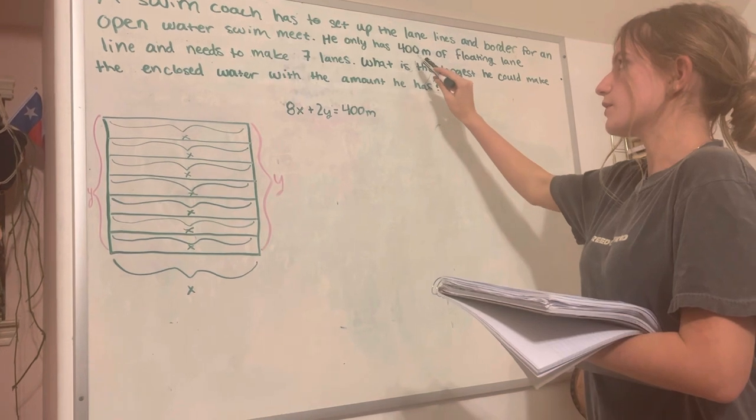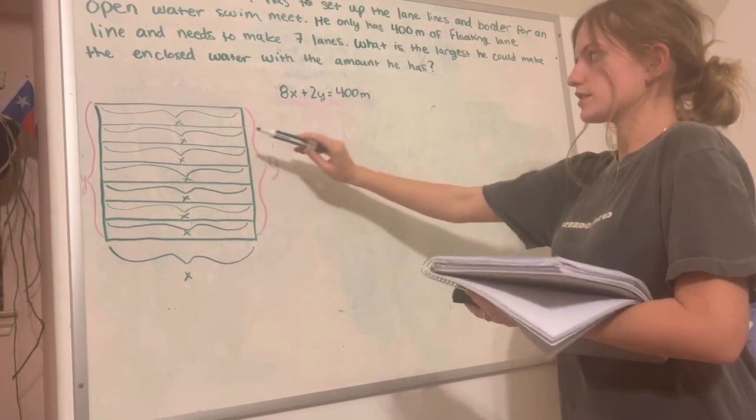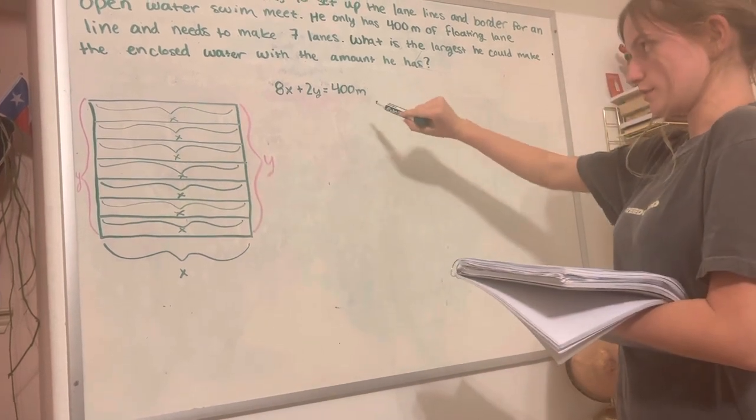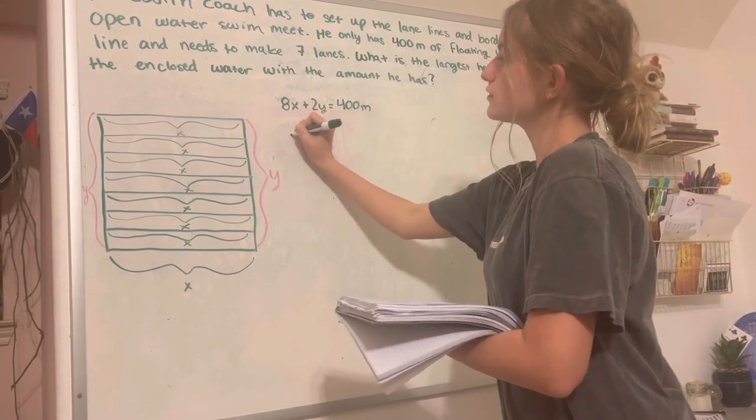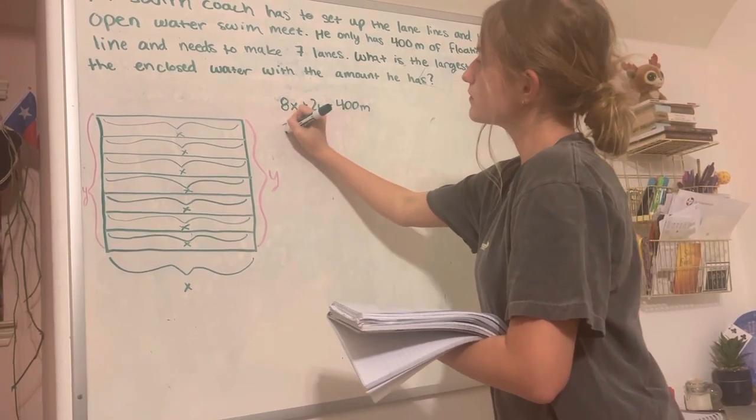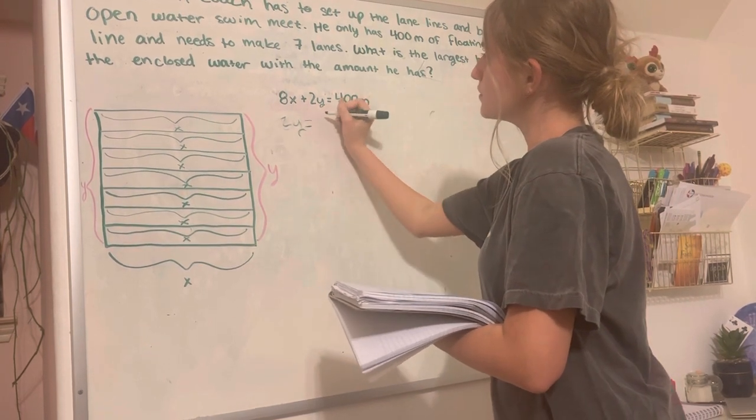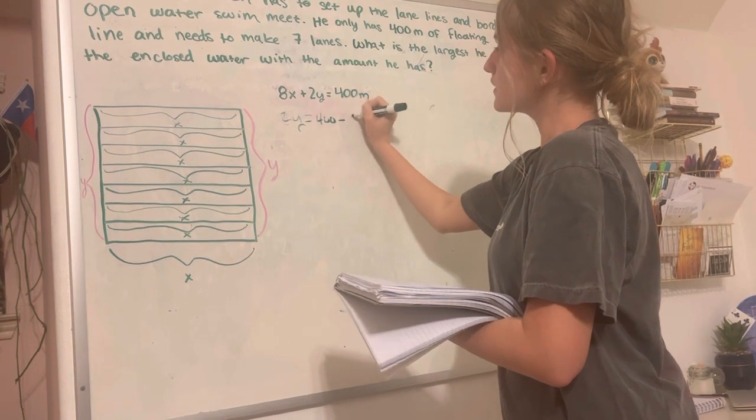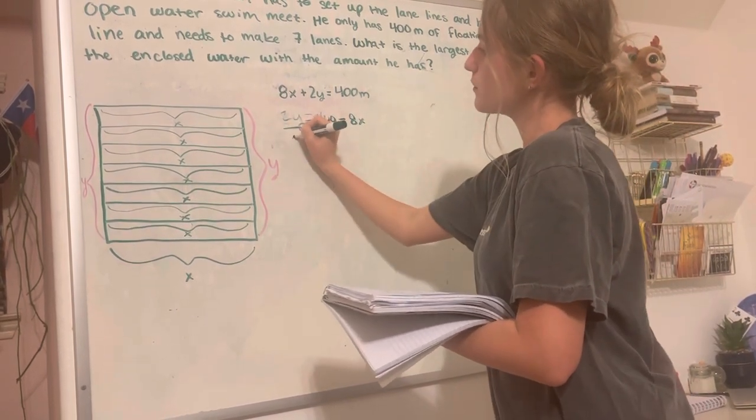Since he has 400 meters, 8x, all these x's, plus 2y, these 2y's, is going to be equal to 400 meters. We can solve for y, so 2y is equal to 400 minus 8x. And then we can divide by 2.